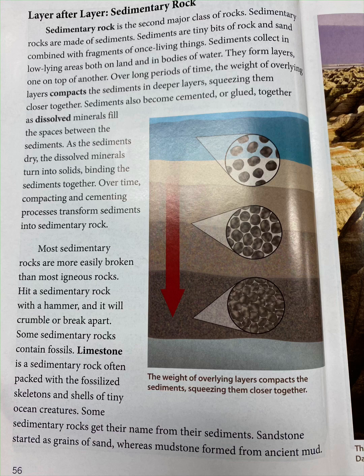Over long periods of time, the weight of overlying layers compacts the sediments in deeper layers, squeezing them closer together. Sediments also become cemented or glued together as dissolved minerals fill the spaces between them. As the sediments dry, the dissolved minerals turn into solids, binding the sediments together. Over time, these compacting and cementing processes transform sediments into sedimentary rock. Most sedimentary rocks are more easily broken than most igneous rocks.